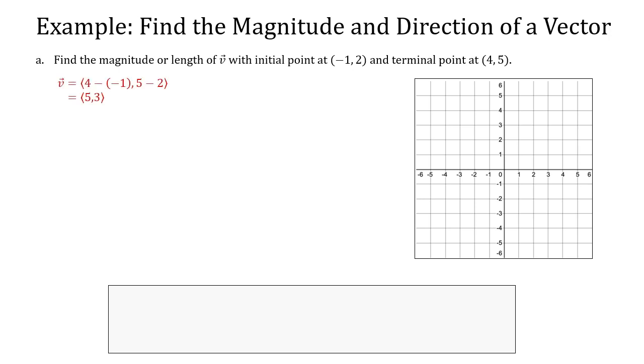Now, we saw in a previous video that the position vector V is 5 comma 3. And that 5 comma 3 came from taking the initial point, which was x sub 1, y sub 1. I may have written y sub 2 on the previous video, but it is the initial point. So it's x sub 1 and y sub 1.